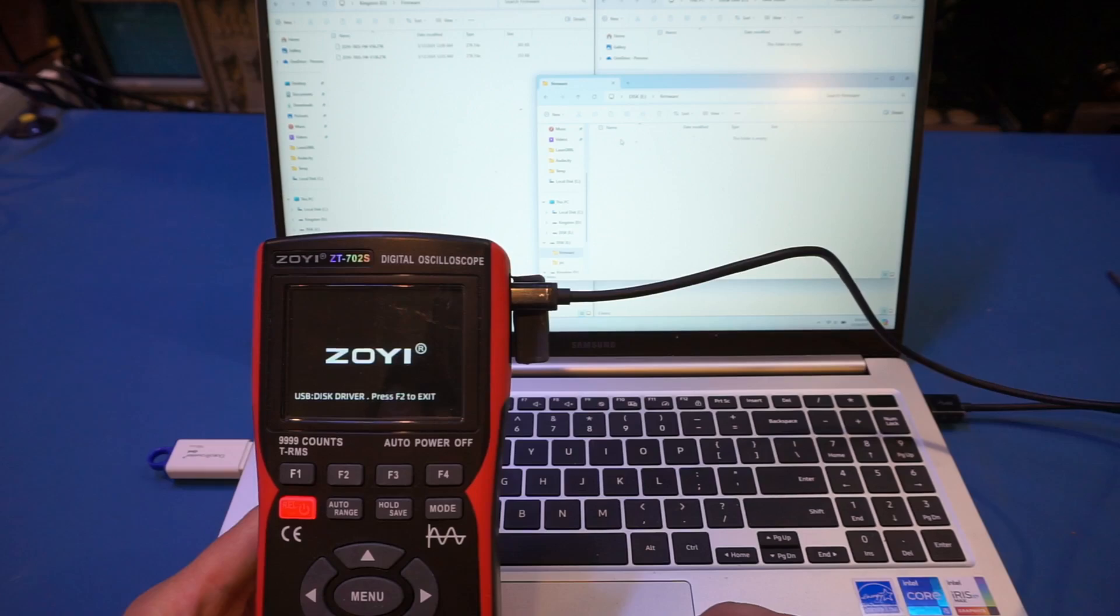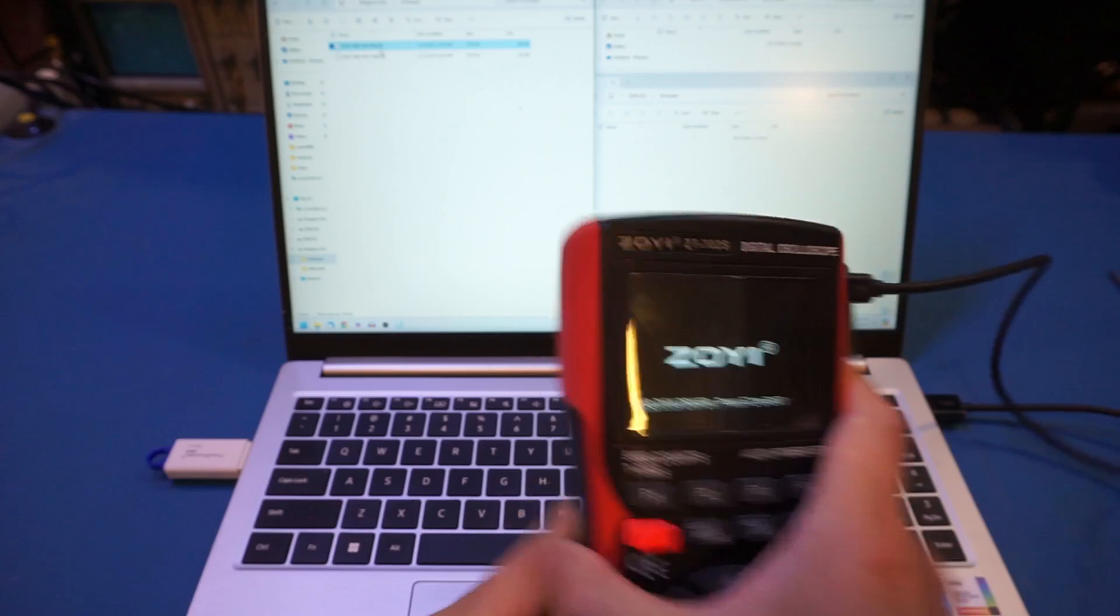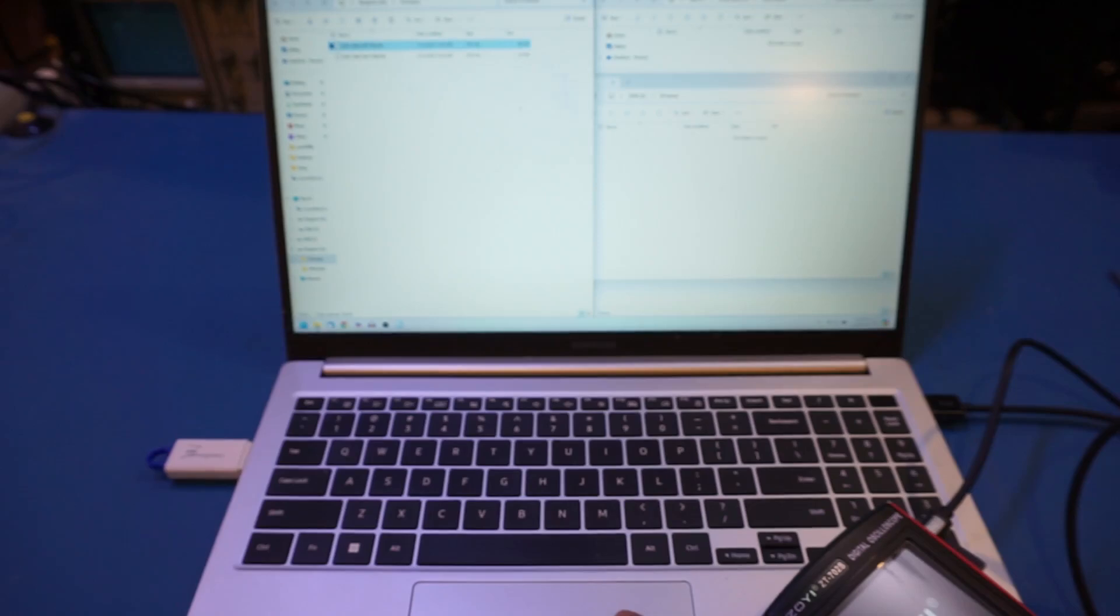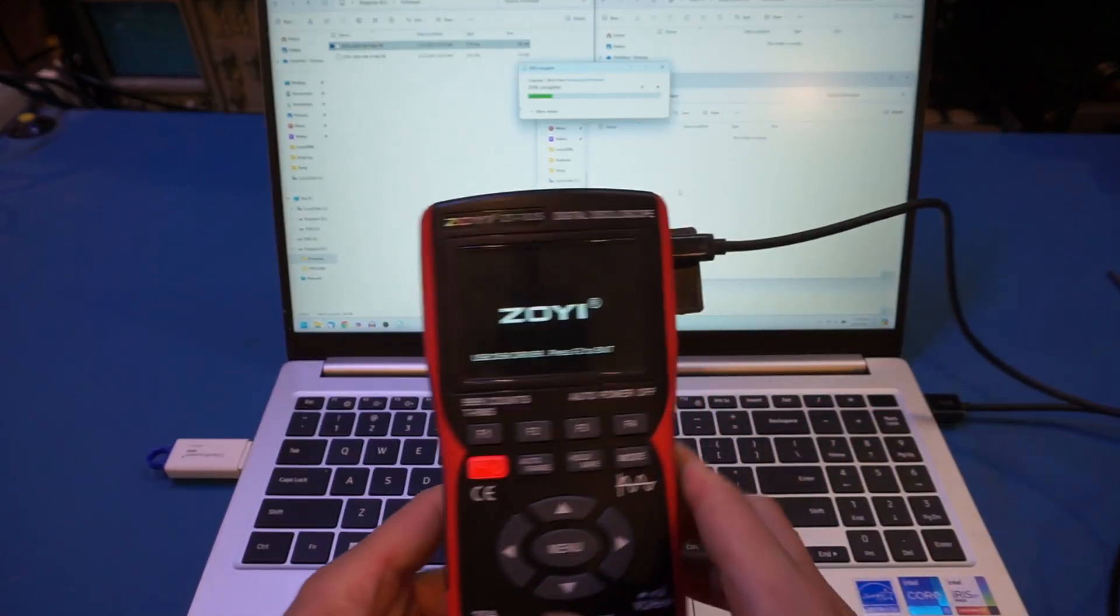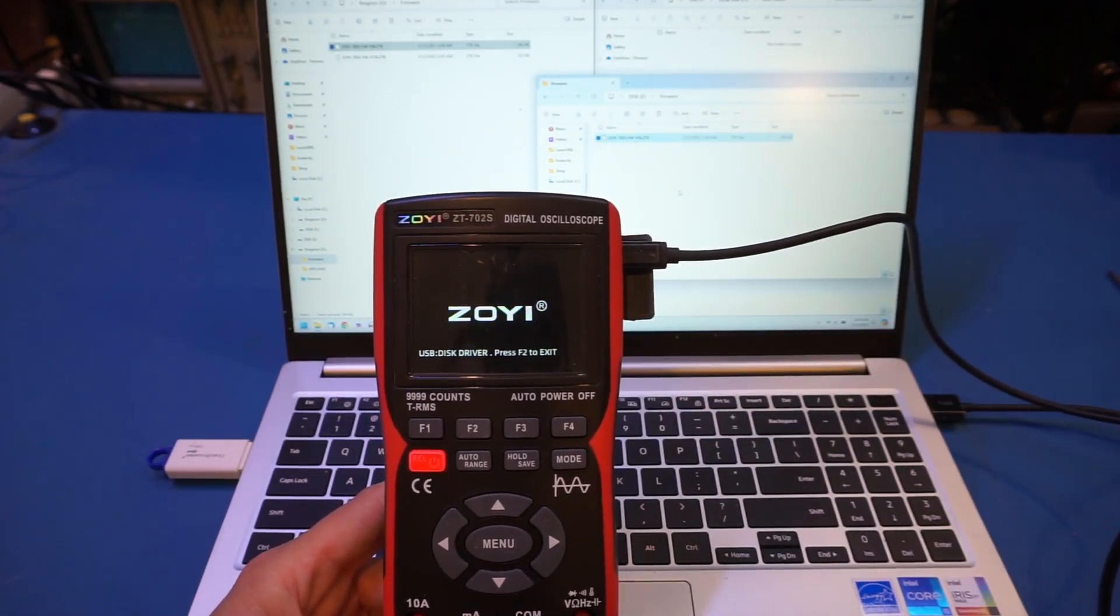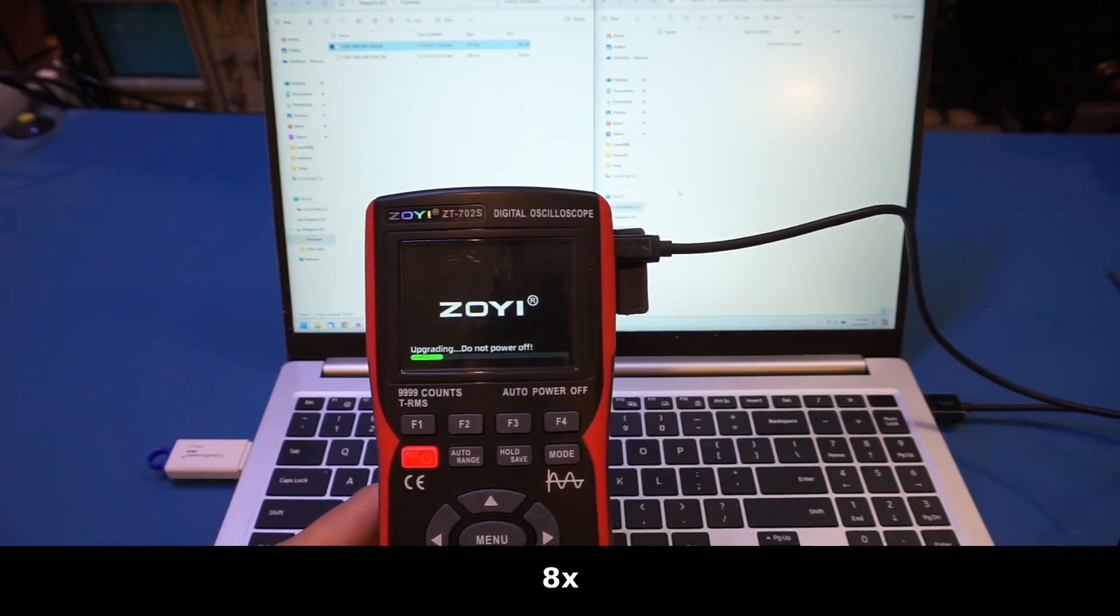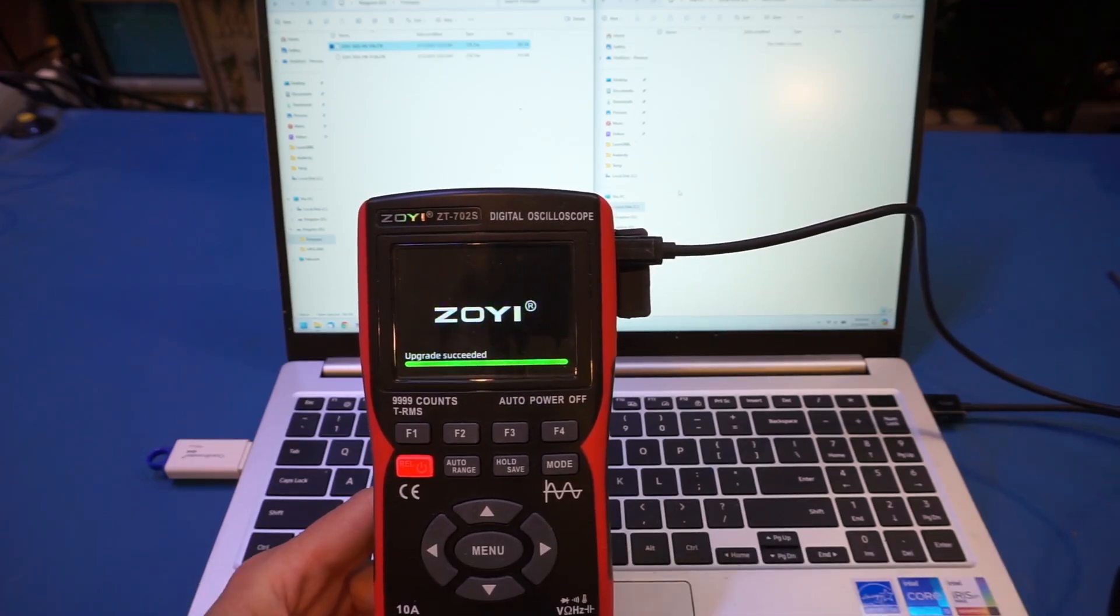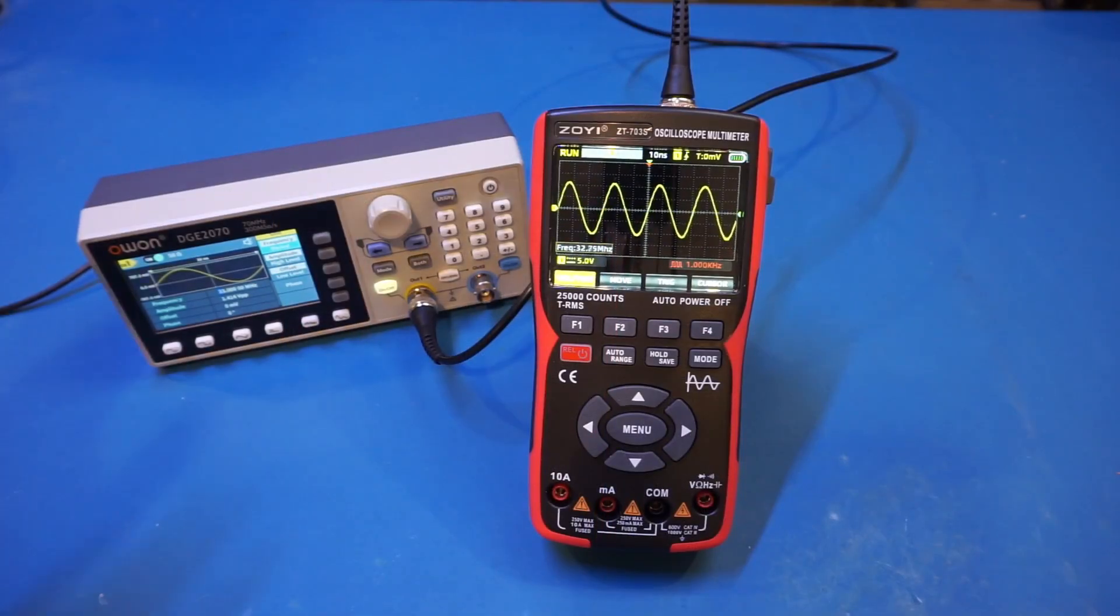Let's plug in the USB. So let's drag the 702S to the firmware folder here. And let's observe on the screen. All right, now I have powered it up again.